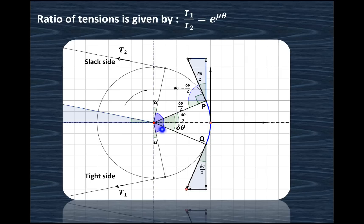The arc PQ is making an angle of delta theta at the center. So if the total angle is delta theta, this angle will be delta theta by 2, and this particular angle is also delta theta by 2. As it is tangential, this angle is 90 degrees. So 90 minus delta theta by 2 gives this particular angle. And since this vertical makes 90 degrees with the horizontal, 90 minus (90 minus delta theta by 2) gives delta theta by 2. So if this angle is delta theta by 2, then this particular angle is also delta theta by 2.